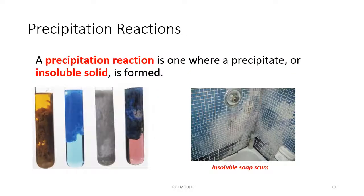A precipitation reaction is one where a precipitate — another word for an insoluble solid — is formed. If you form a precipitate in solution, it might appear milky, opaque, or cloudy. If left to settle long enough, it'll sink to the bottom where it could be filtered off and dried. If you've ever heard of hard water, it can contain metal ions such as calcium or magnesium, which can lead to a precipitate called soap scum forming in the shower.